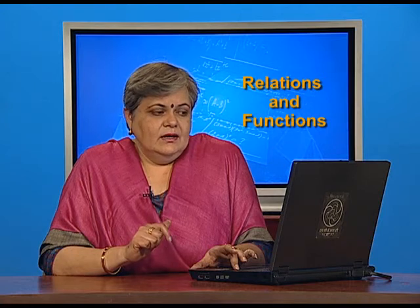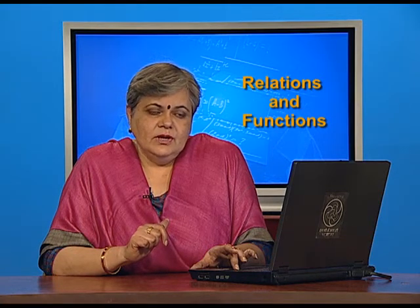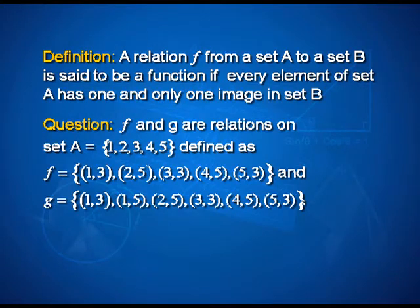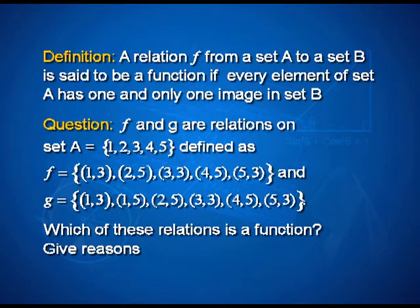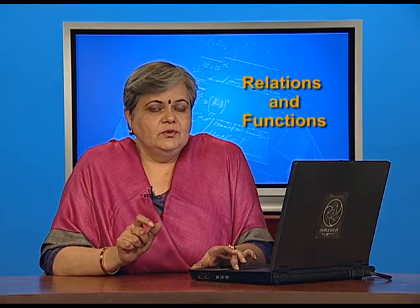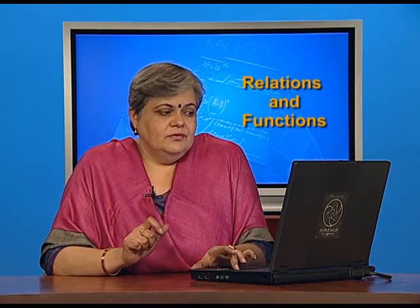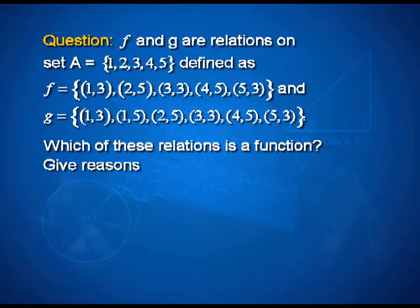So, if I have a relation F and a relation G defined on set A. Set A has five elements 1, 2, 3, 4, and 5, and the two relations are defined as list of ordered pairs F and G both being given. Now, which of these relations is a function? You also have to give reasons. So, if you keep the definition in mind, all elements of set A must be uniquely related to elements of the set B. So, as you can see in the first case, we are looking at ordered pairs 1, 3, 2, 5, 3, 3, 4, 5, 5, 3.